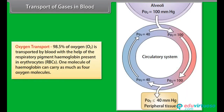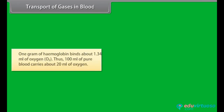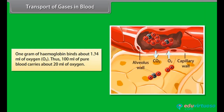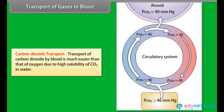Oxygen transport: 98.5% of oxygen is transported by blood with the help of the respiratory pigment hemoglobin present in erythrocytes (RBCs). One molecule of hemoglobin can carry as many as 4 oxygen molecules. One gram of hemoglobin binds about 1.34 ml of oxygen. Thus, 100 ml of pure blood carries about 20 ml of oxygen.